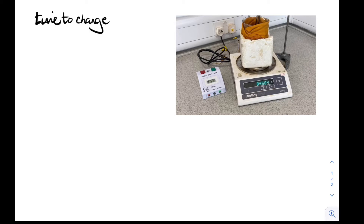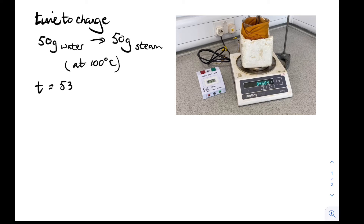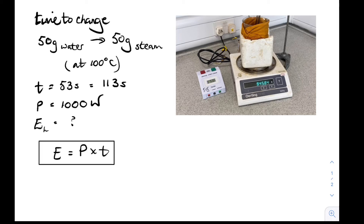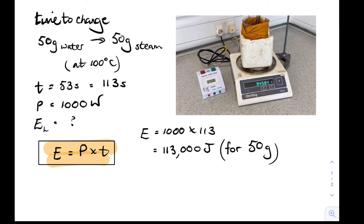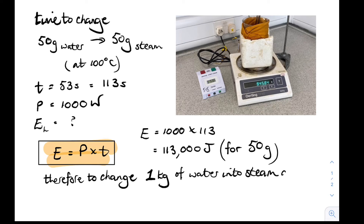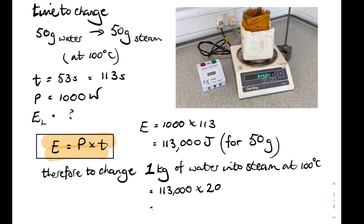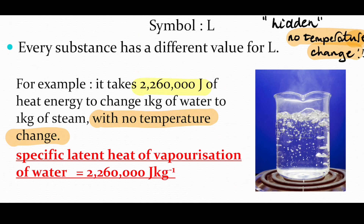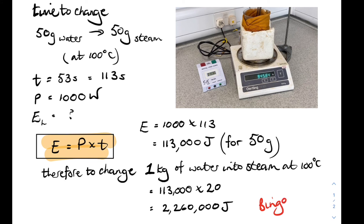Let's do the maths. The time to change 50 grams of water into 50 grams of steam at 100 degrees C — no temperature change — was 113 seconds. The power of the heater was 1000 watts. Power times time gives us 113,000 joules for 50 grams. Scaling up to one kilogram, we multiply by 20, giving a total of 2,260,000 joules. Comparing that with the actual value from the data sheet — it's the same! That's the specific latent heat of vaporization of water.